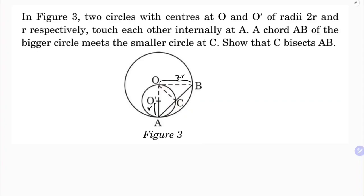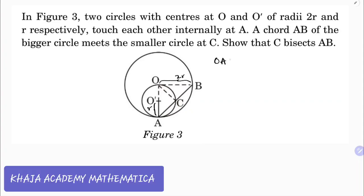OA is diameter, OA is the diameter of the smaller circle. If it is a diameter,